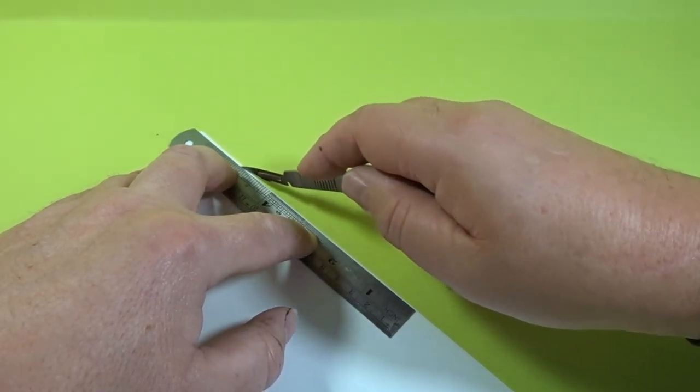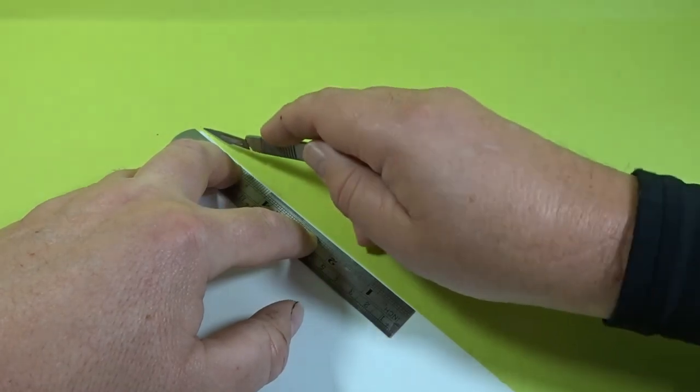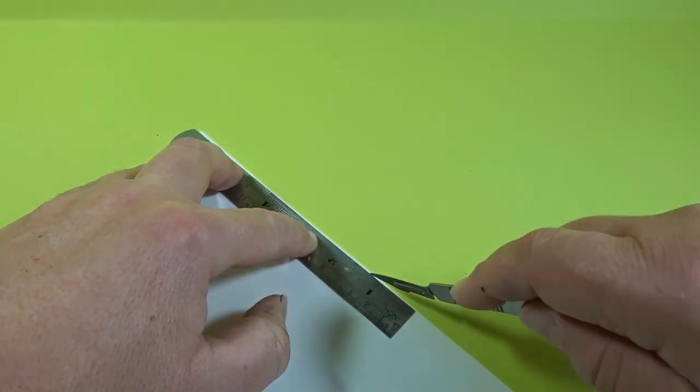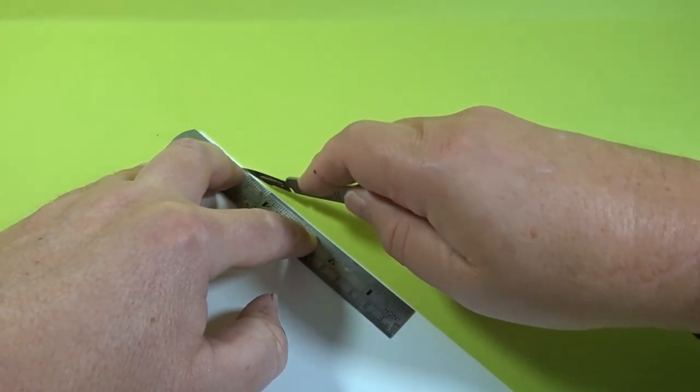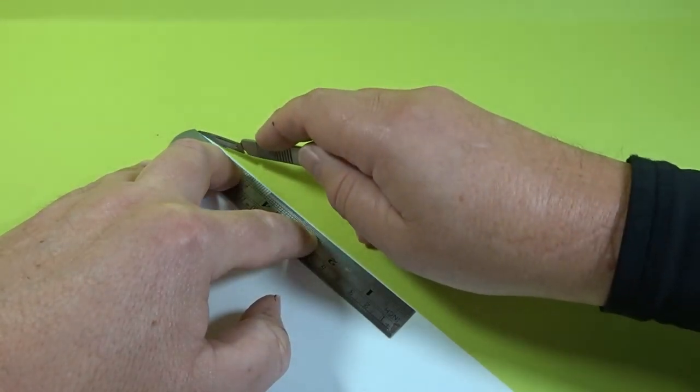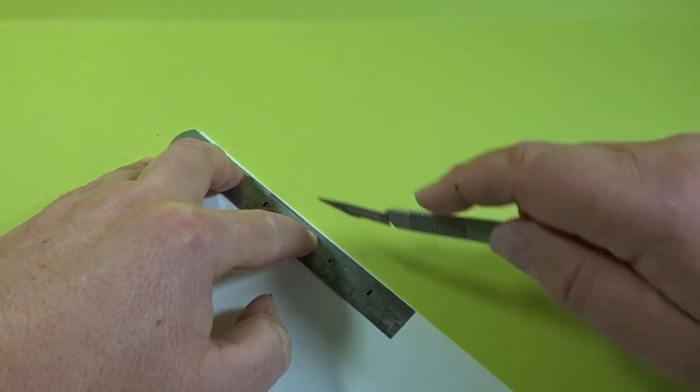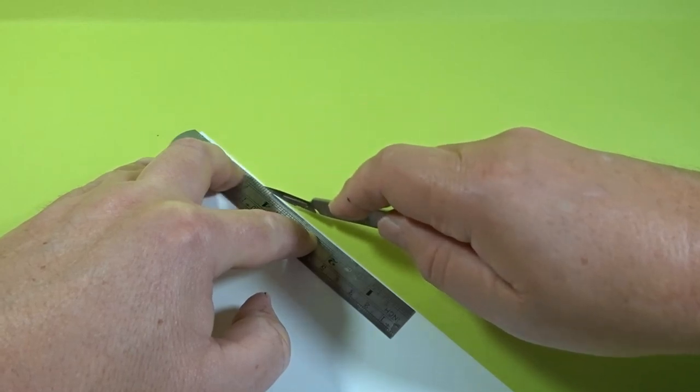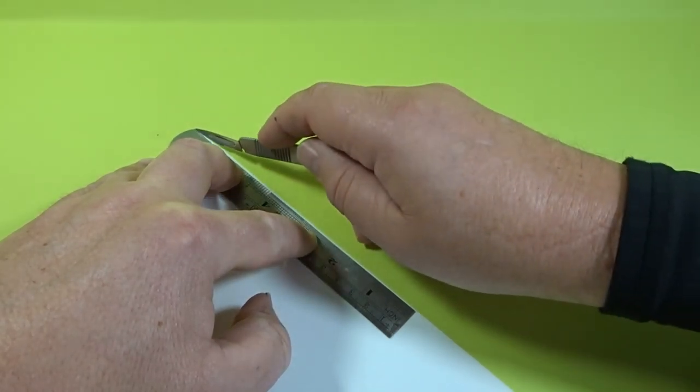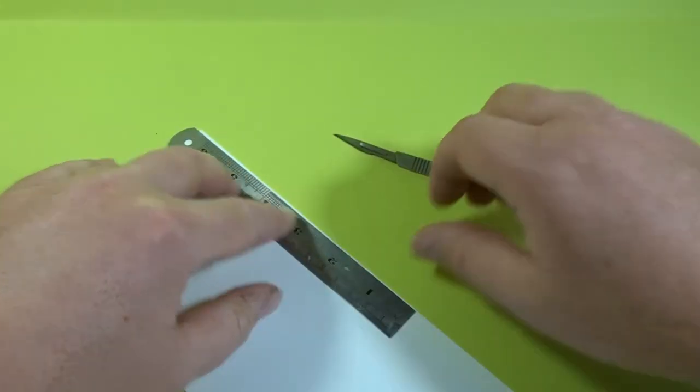Don't try and do this all at once otherwise you'll end up curling the edge. Try and keep the knife as horizontal as possible to lessen the bevel edge, and as you keep scribing down eventually the plastic card will start to come apart and you'll have your straight edge.